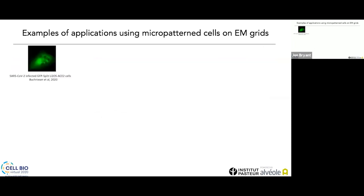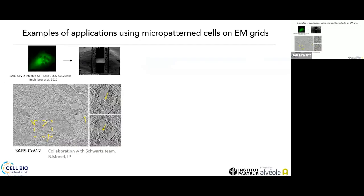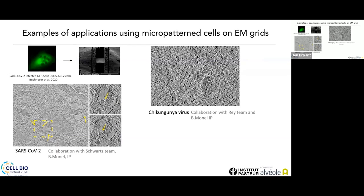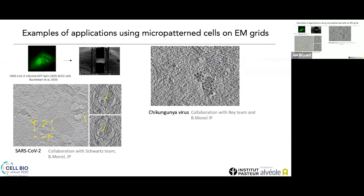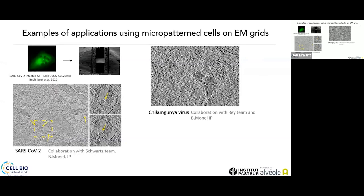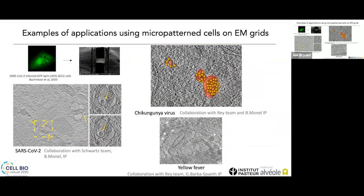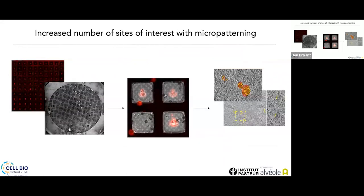Finally, here are some examples of applications at Institut Pasteur using micropatterned cells on EM grids. In a collaboration with the Schwartz lab, I used GFP-split U2OS ACE2 cells to properly locate SARS-CoV-2-infected cells, allowing selection of milled lamellas only in infected cells — enabling us to resolve ultrastructures of membrane rearrangement during SARS-CoV-2 infection. We applied the same pipeline, in a collaboration with the Felix Rey team, to resolve Chikungunya virus in a near-native state, where the virus appears to cluster around membrane areas, and also worked on yellow fever. By using micropatterning in combination with cryo-CLEM, we hope to build a fully automated pipeline, increasing our yield, throughput, and success rate of finding the object of interest inside the cells.